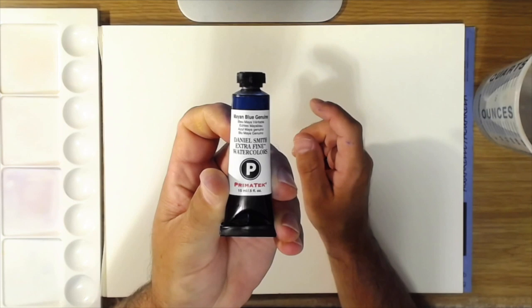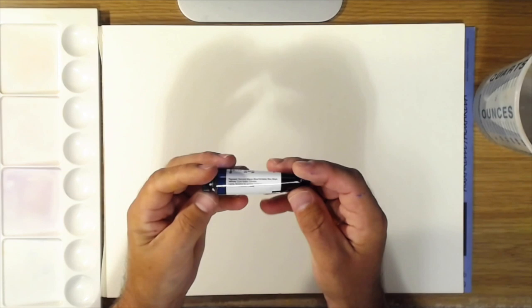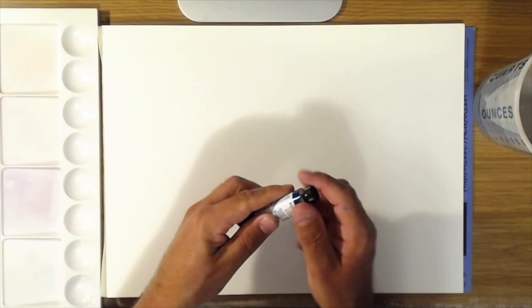It's in their Primatek line, which is a line of colors based on natural minerals. This is the Mayan Blue Genuine, and it doesn't have a pigment index number assigned to it. On the tube where that would normally be listed, it just says Genuine Mayan Blue. I thought we could take a look at it and see what it looks like.